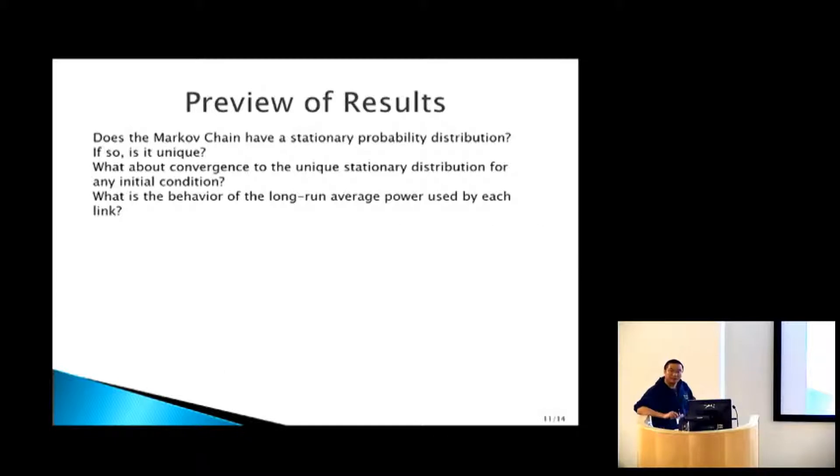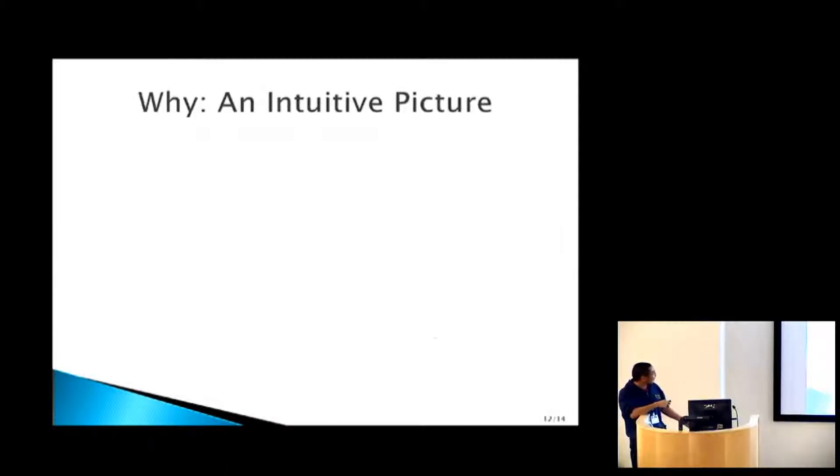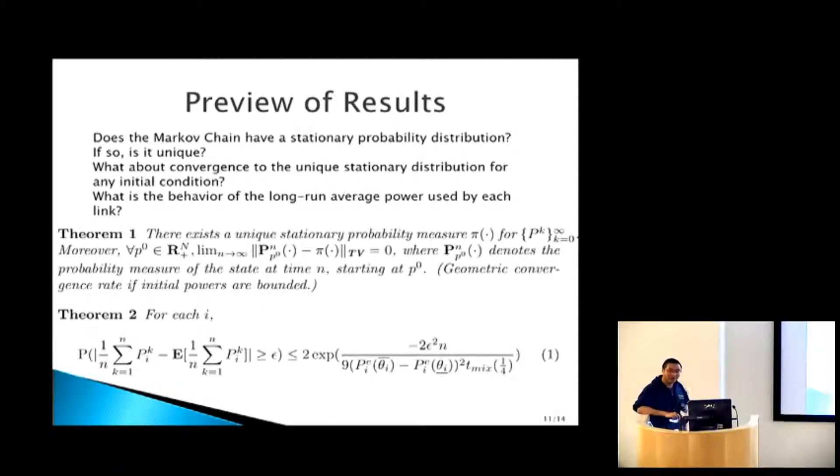It turns out the answer to all these questions are positive. There exists unique thing and convergence. We have geometric convergence rate if the initial power is bounded. And the long run average power has a high concentration. The deviation probability decreases exponentially with the number of iterations n.